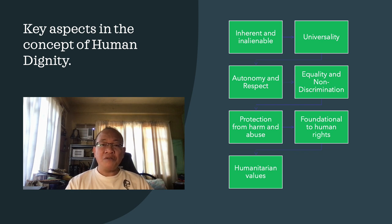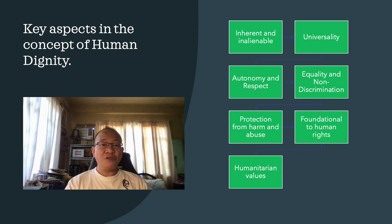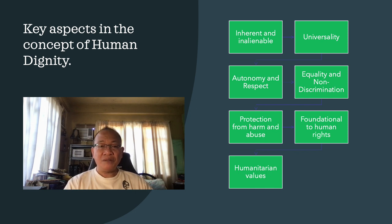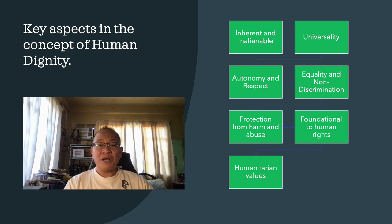Number five is protection from harm and abuse. Human dignity includes the right to be protected from degrading treatment, exploitation, violence, and other forms of abuse. It requires that individuals be treated with compassion, empathy, and dignity, free from any form of degradation or humiliation. Number six is foundational to human rights. Human dignity serves as the foundation for the entire framework of human rights. It underpins the recognition and protection of civil, political, economic, social, and cultural rights as enshrined in international human rights instruments, such as the Universal Declaration of Human Rights.